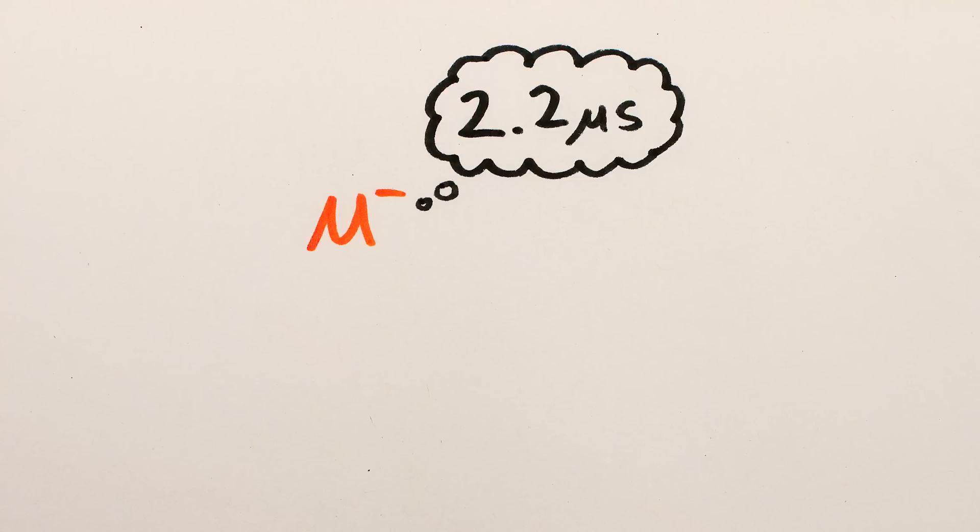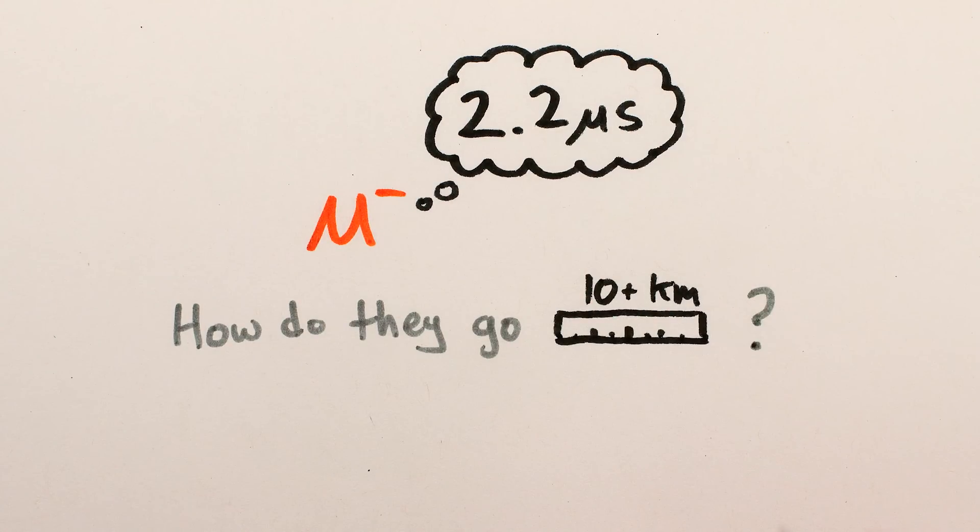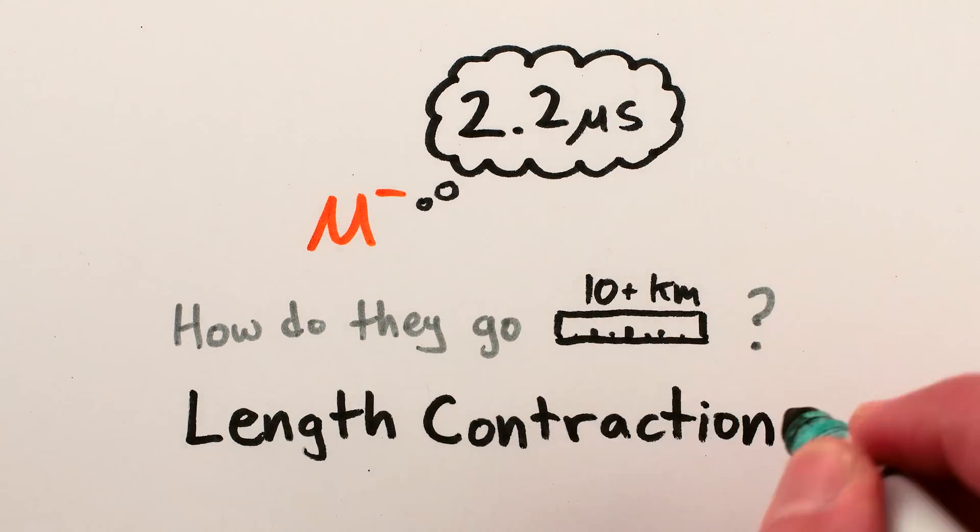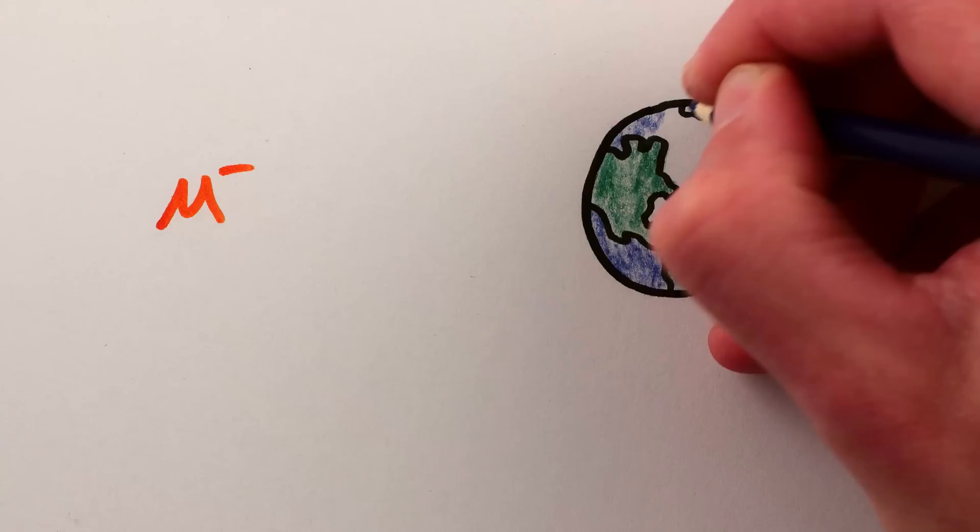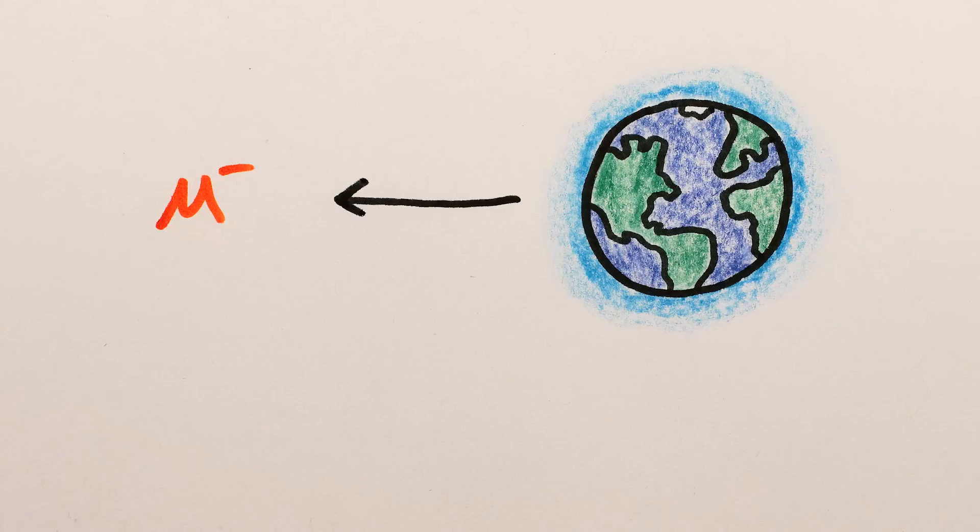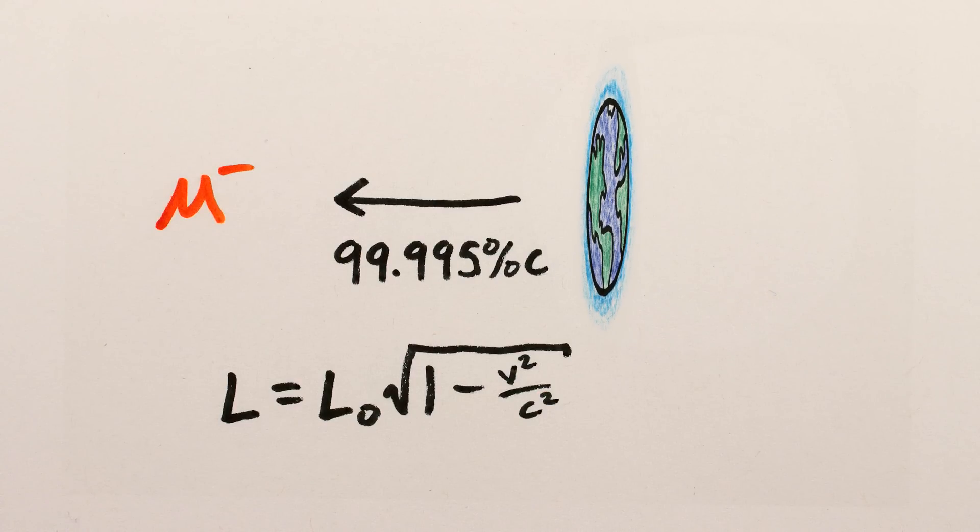But what about from the muons' perspective, where they do only live on average 2.2 microseconds? Well, for them, the answer to the apparent paradox is also relativistic – relativistic length contraction. From the muons' perspective, it's the Earth and the atmosphere which are moving at 99.995% the speed of light towards the muon, and the lengths of moving objects are literally contracted by a factor dependent on their speed.